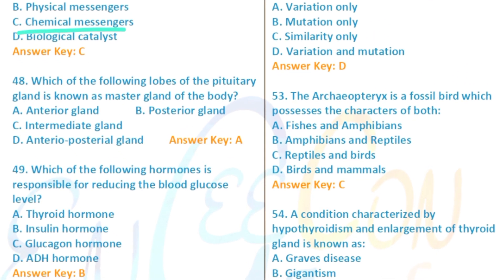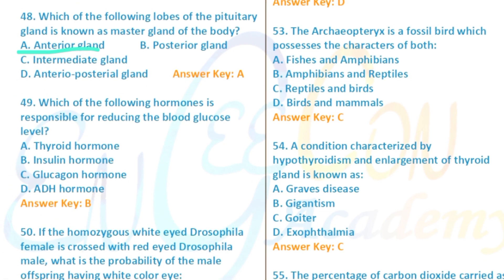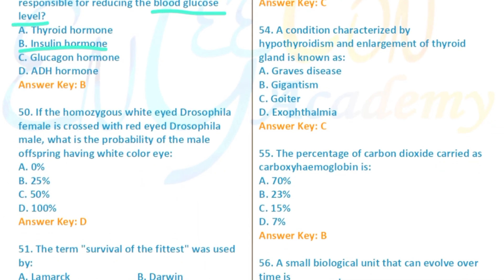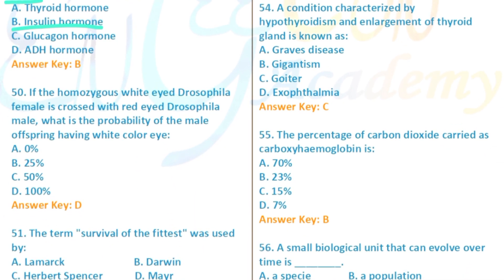Question 47: Hormones are chemical messengers. Question 48: Which lobe of the pituitary gland is known as the master gland of the body? The anterior lobe of the pituitary gland is the master gland. Question 49: The hormone responsible for reducing blood glucose level is insulin.